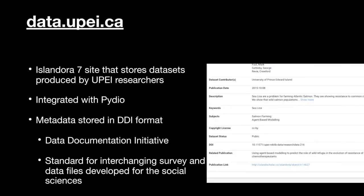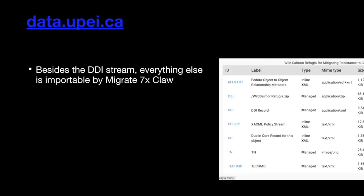It's just showing you a little bit more of what the data set looks like on a page on data.upei.ca. Besides the DDI stream, everything else is pretty standard-looking Islandora 7 data streams and content. The data sets themselves were stored in zip files for the most part, so we didn't really pull them apart or do a whole lot with them. The real main differentiator was storing the custom metadata stream, which was the thing we had to do some work to migrate out.